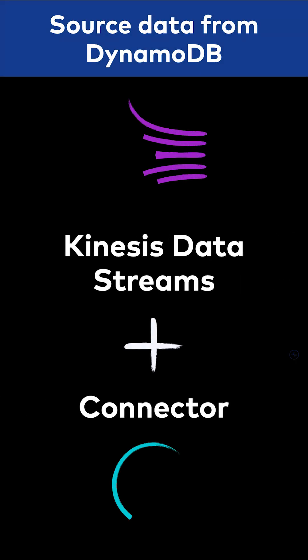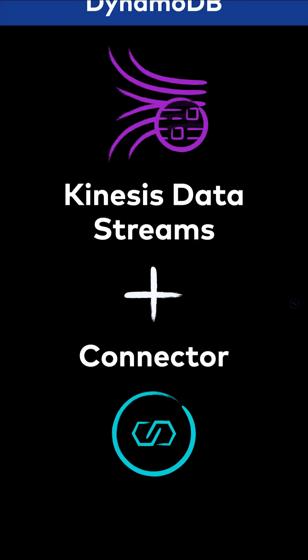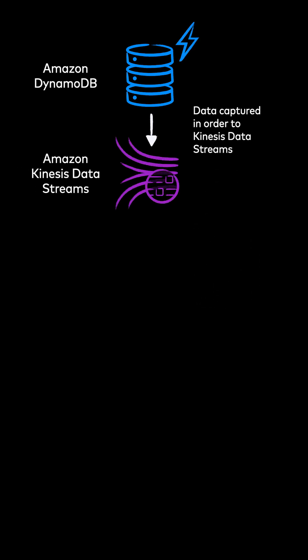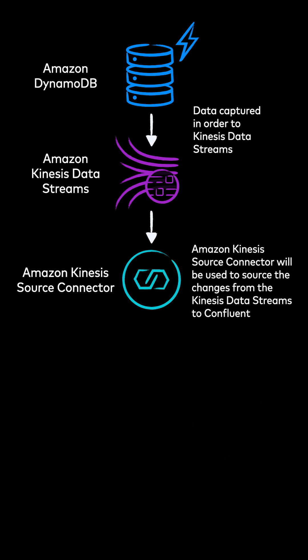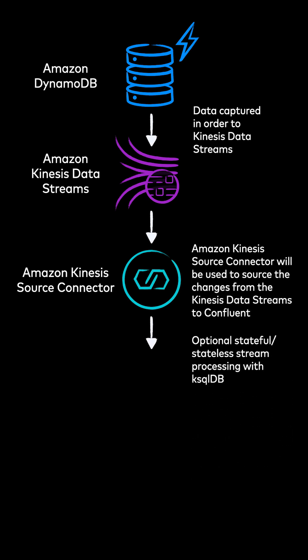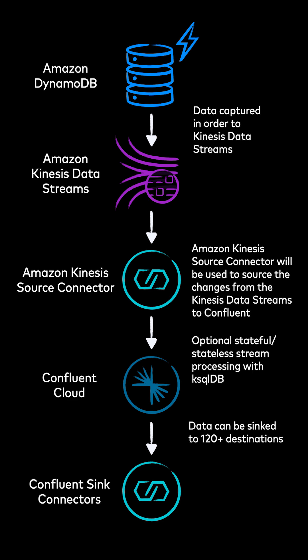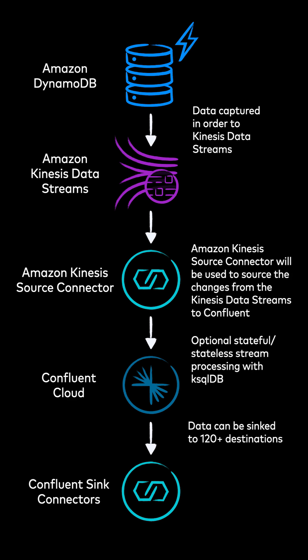Let's explore how to use the Kinesis Data Streams Connector to source data from DynamoDB to Confluent. In this method, Kinesis Data Streams captures item-level modifications to a DynamoDB table and replicates them to Kinesis Data Streams. The fully managed connector provided by Confluent then reads these changes from Kinesis and writes them to Confluent. This can be done using the Confluent UI or a very simple JSON configuration, making it easy to set up without writing any code.